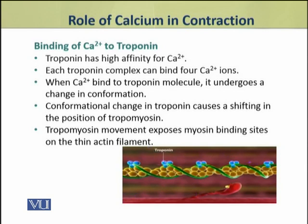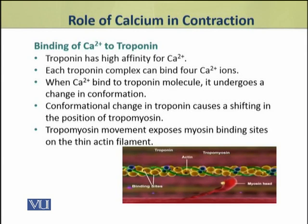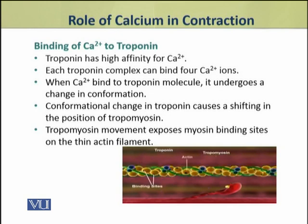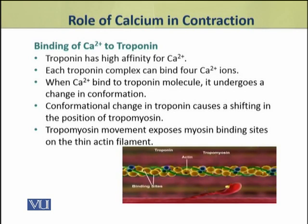Troponin has high affinity for calcium ions. Each troponin-tropomyosin complex can bind 4 calcium ions. When these calcium ions bind to the troponin molecule, as a result, troponin undergoes a change in its conformation.